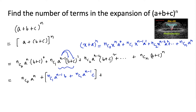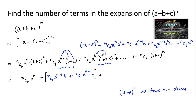Similarly, in the third term, the expansion of (b+c)^2 will have three terms, because we know that (x+a)^n has n+1 terms. So (b+c)^2 gives three terms, each multiplied by a^(n-2), giving three terms. And (b+c)^n will have n+1 terms.